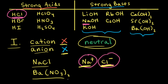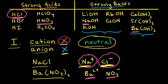As another example, let's think about barium nitrate. Barium nitrate consists of the barium 2+ cation and the nitrate anion. Because the barium 2+ cation is from the heavier group 2A, the barium 2+ cation will not react with water. And because the nitrate anion is the conjugate base to a strong acid, which is nitric acid, the nitrate anion will not react with water. Since neither the cation nor the anion will react with water, an aqueous solution of barium nitrate will be neutral.